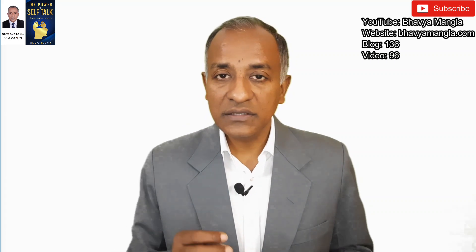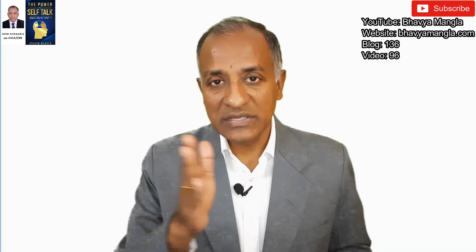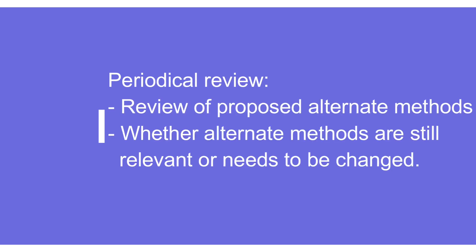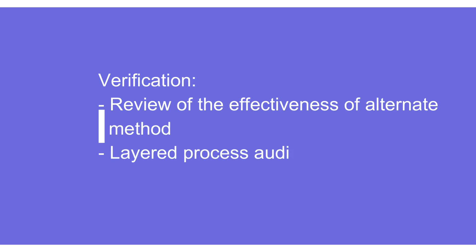That brings point number 3: periodical review. We may have done some change, but unless we are regularly monitoring whether those changes are actually implemented the way they were planned — or whether something has changed — we cannot be sure. That is what we are talking about with periodic review. Point number 4 is verification: are we verifying from time to time that whatever has been implemented as an alternate method is actually being done in the same way, or whether certain changes have started creeping in?